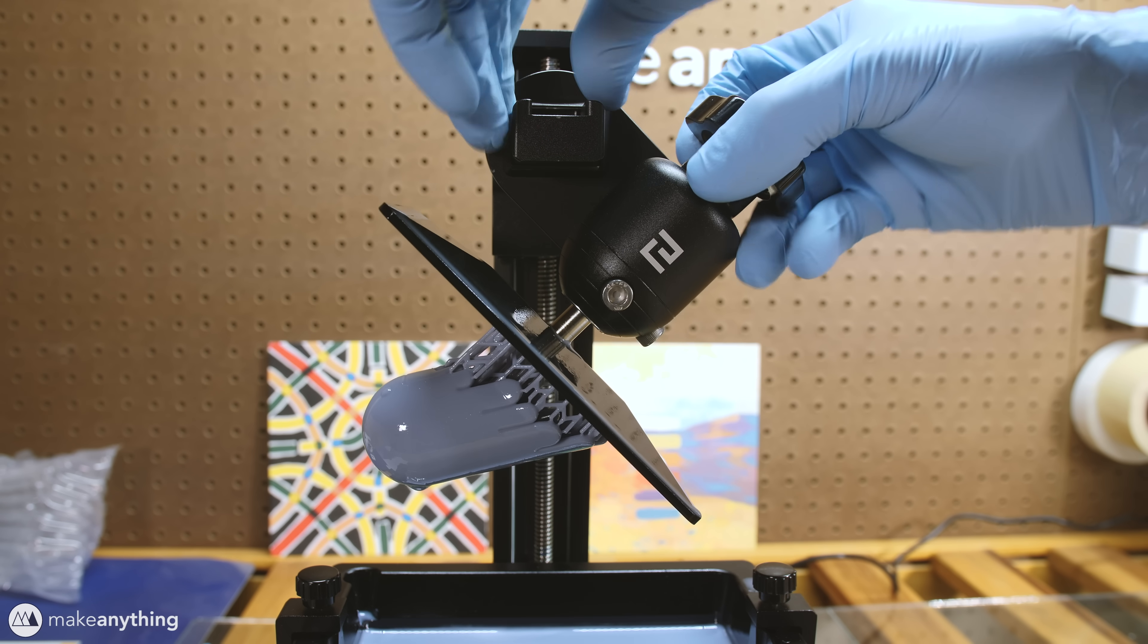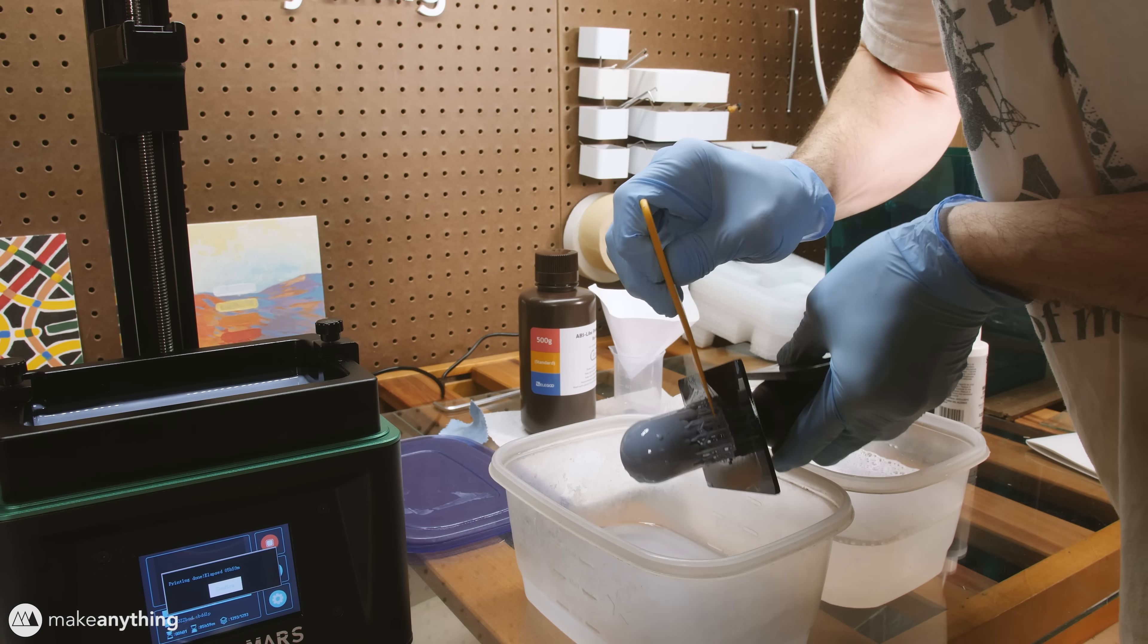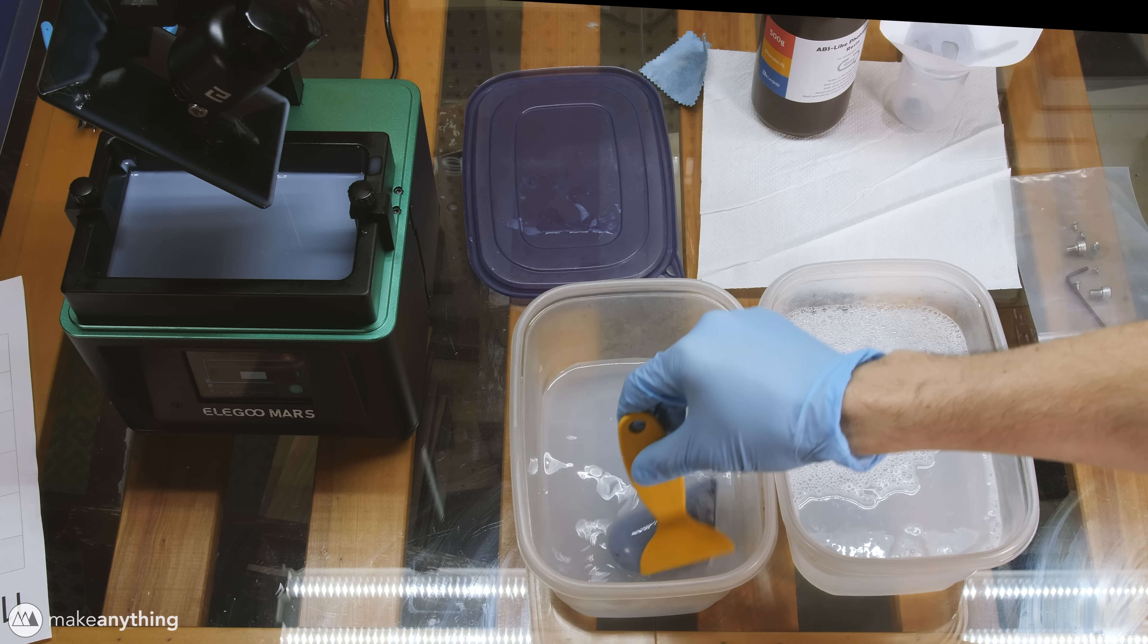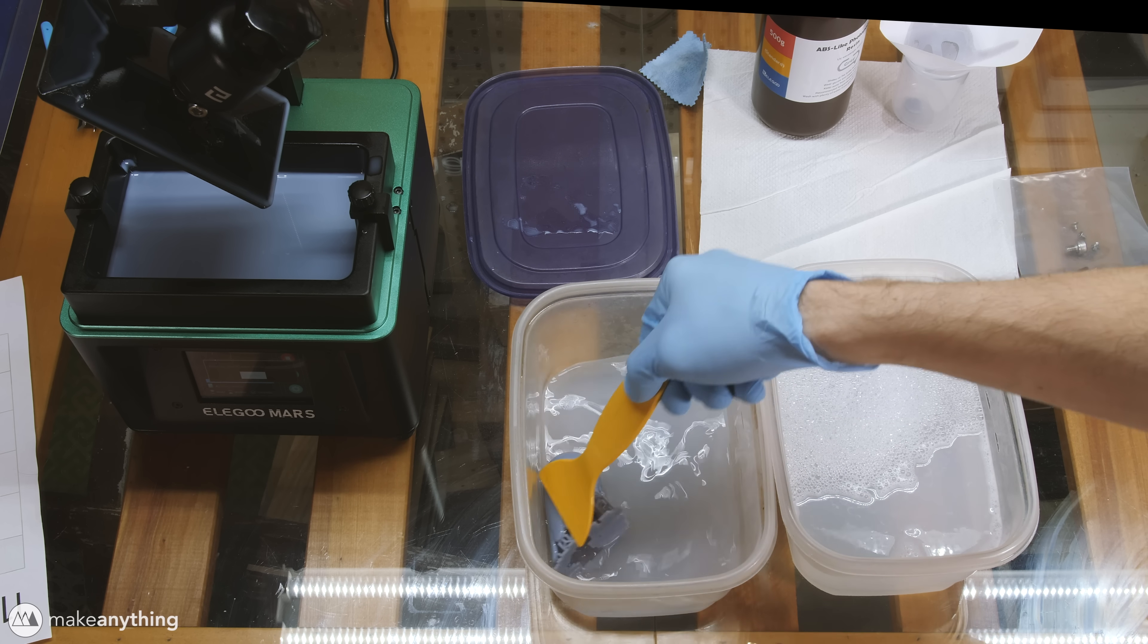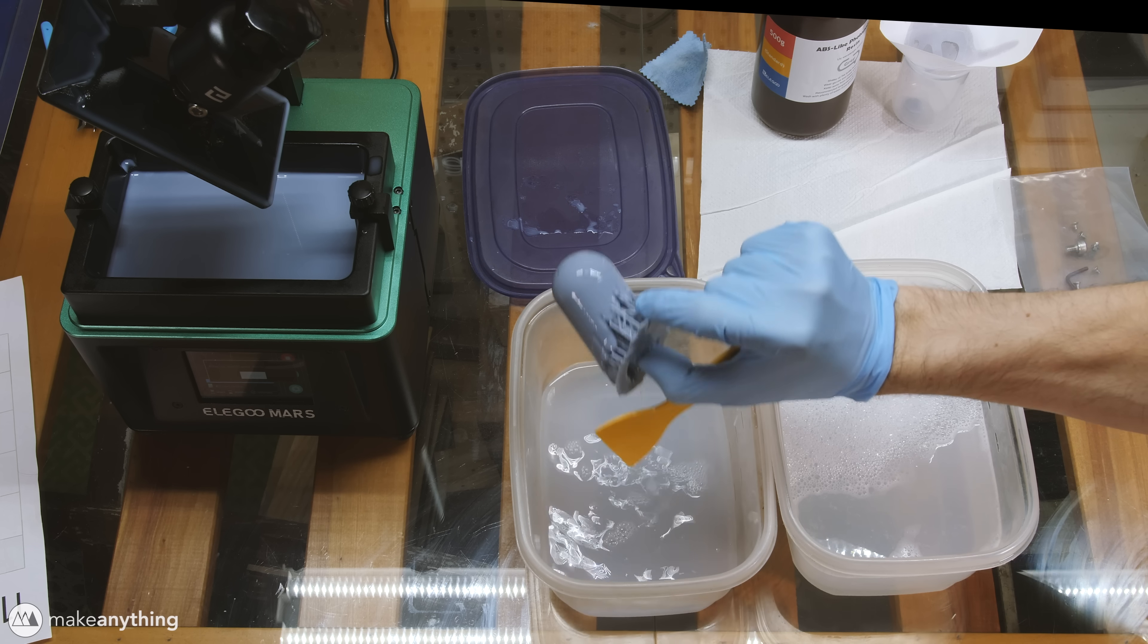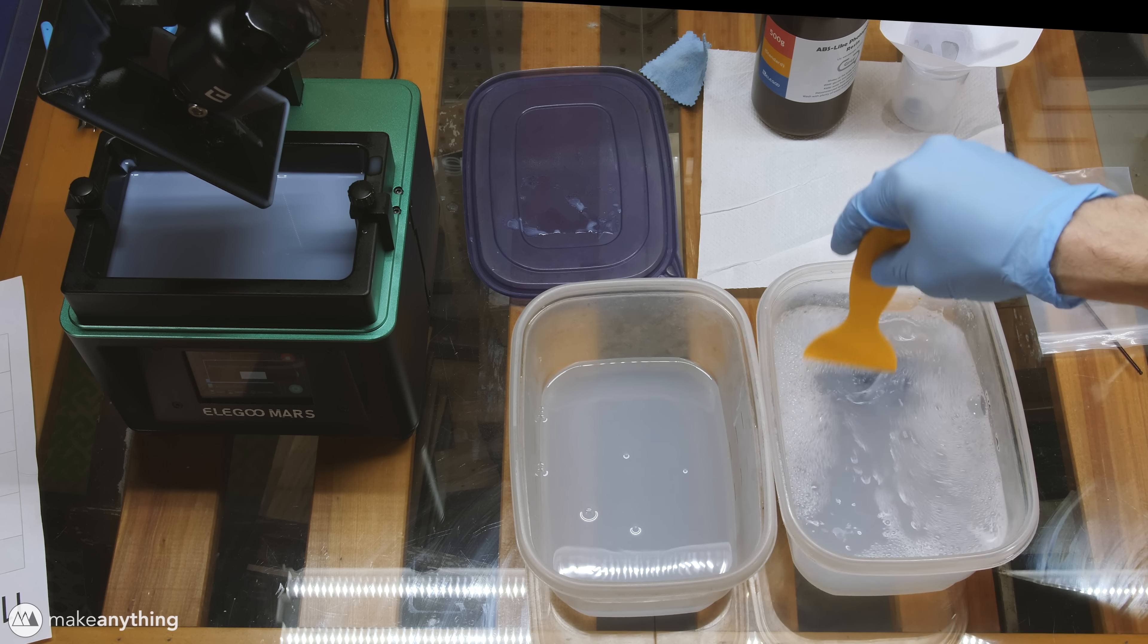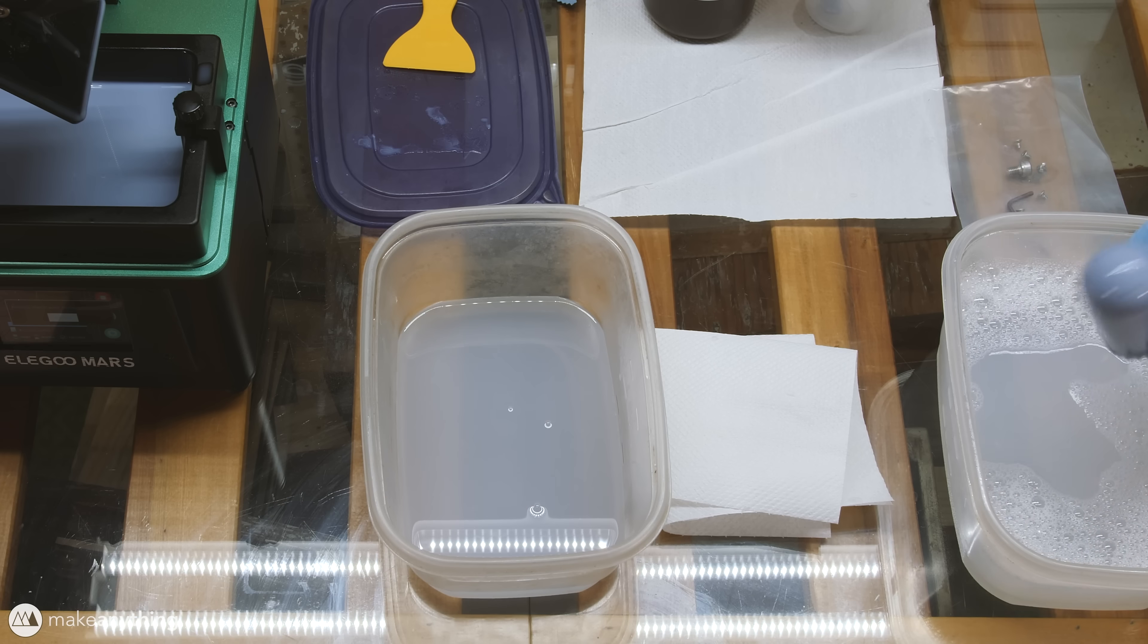I left my print to hang up for a little while so that any excess resin could drip back into the vat and then I went ahead and pried off our model into this tub of isopropyl alcohol. It's suggested to wash your print in a solution of 99% isopropyl alcohol though I was only able to get my hands on 91% alcohol and it still seemed to work. After swishing that around for a while I'll transfer it to this second tub filled with warm soapy water and swish it around a bit more to wash off any excess alcohol and resin.